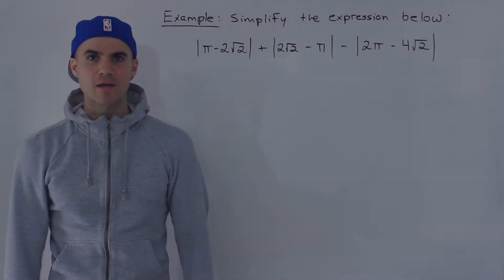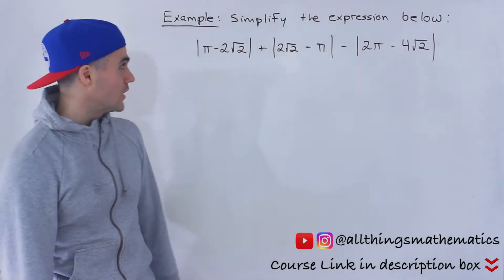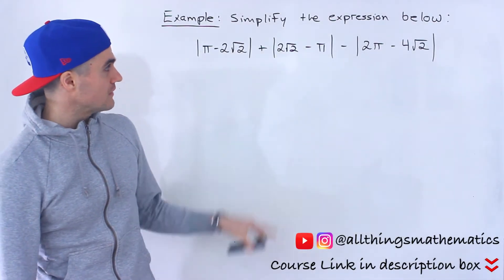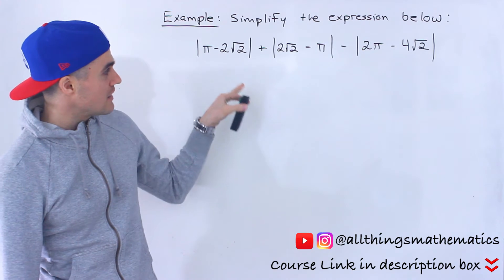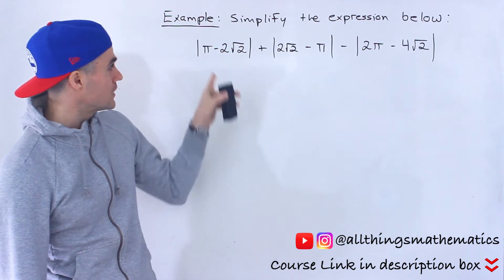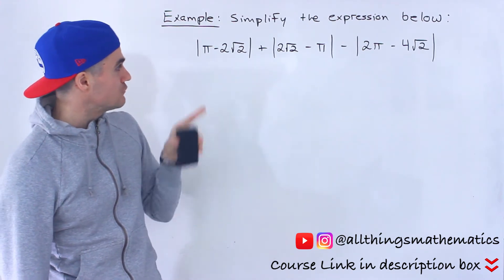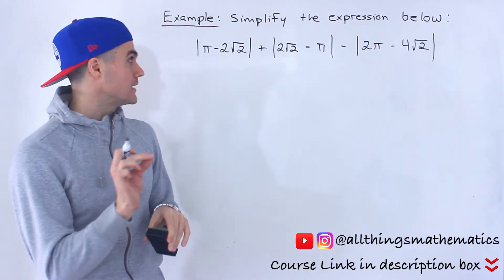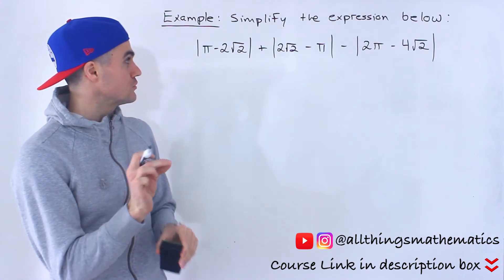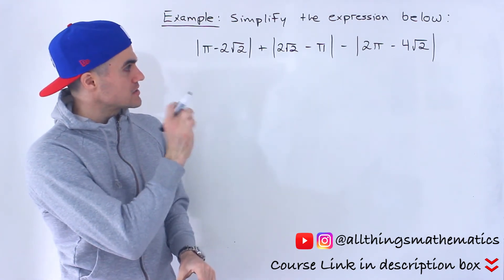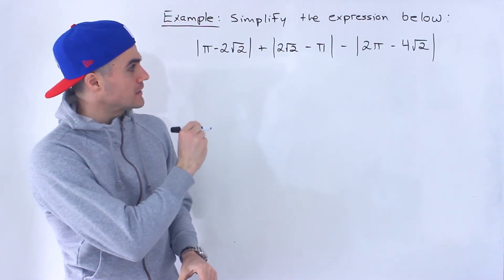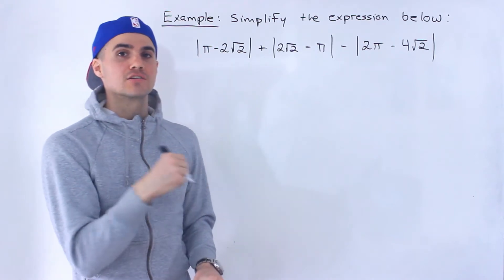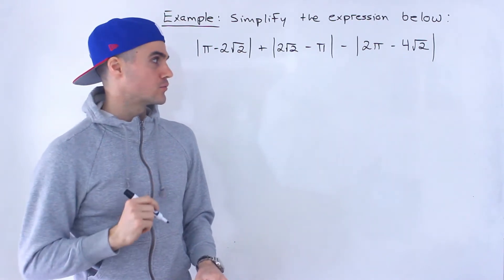What's going on everyone? Welcome back. Patrick here. Moving on to the next question. We have to simplify this expression over here. We have the absolute value of pi minus 2 root 2, plus the absolute value of 2 root 2 minus pi, minus the absolute value of 2 pi minus 4 root 2.